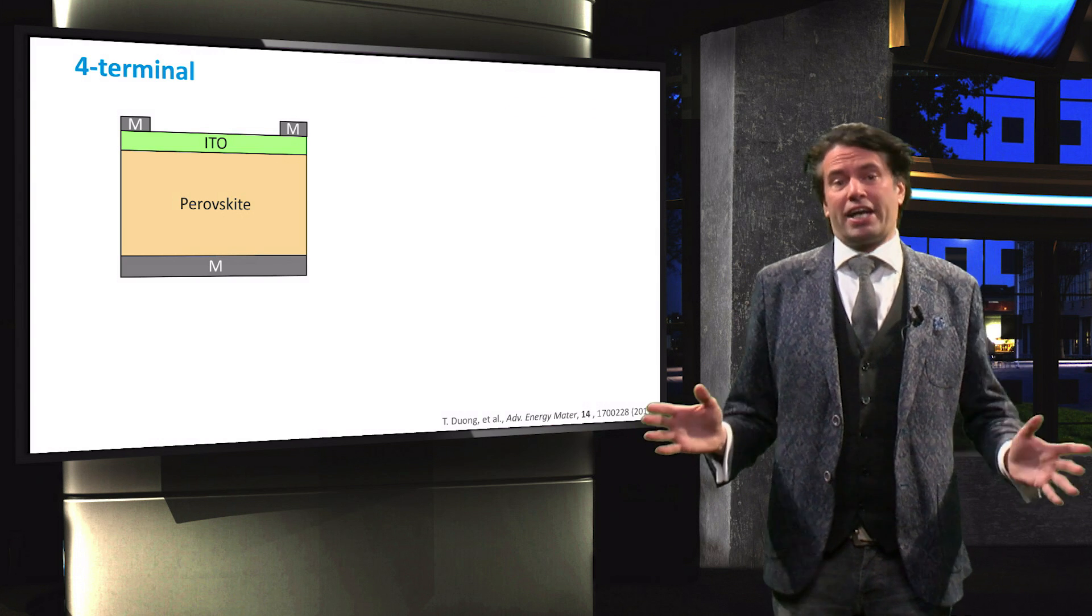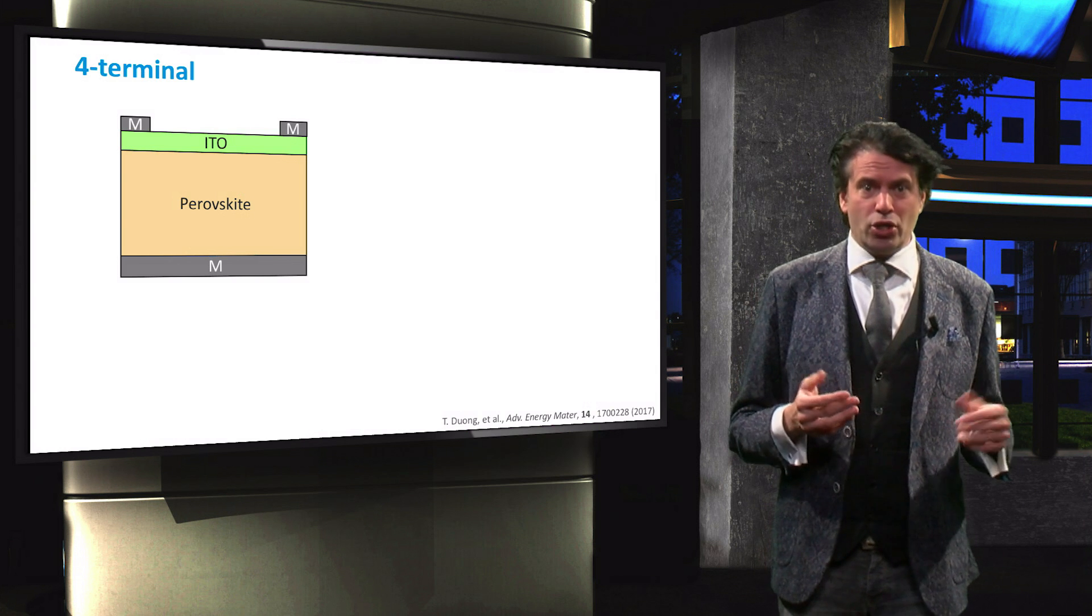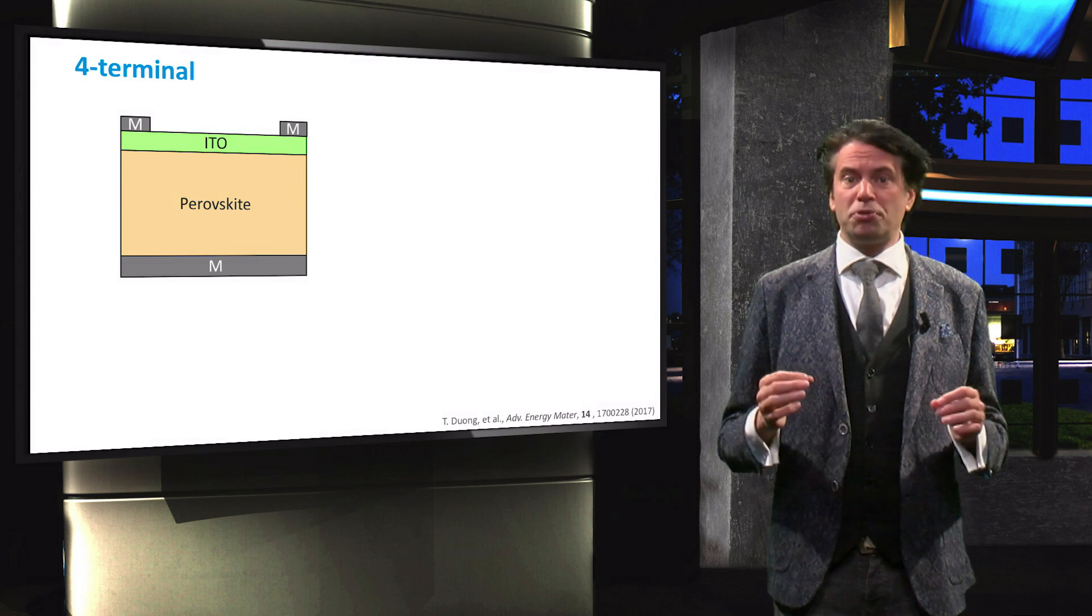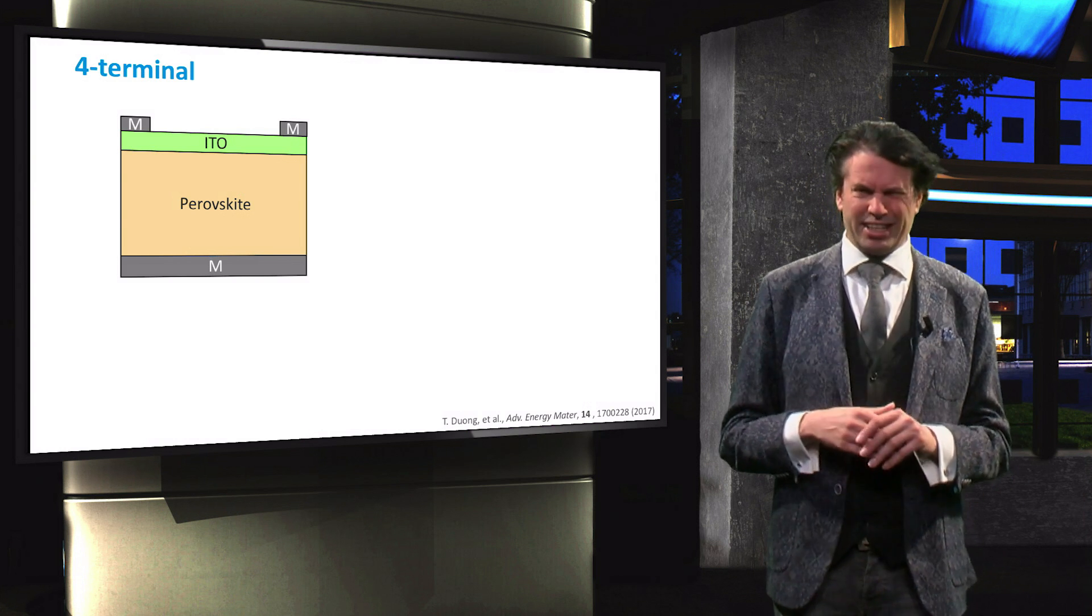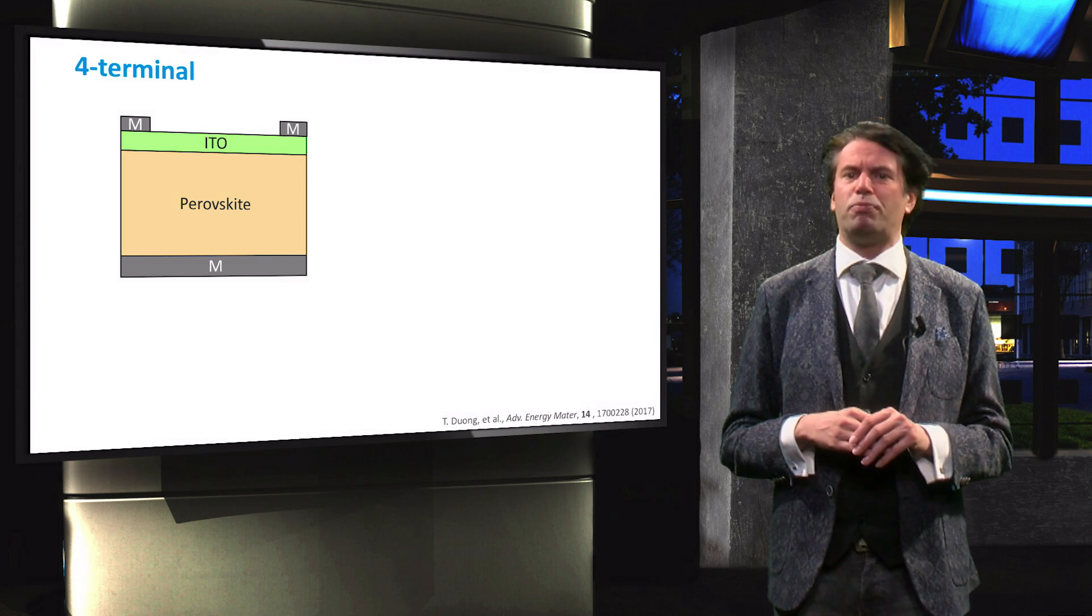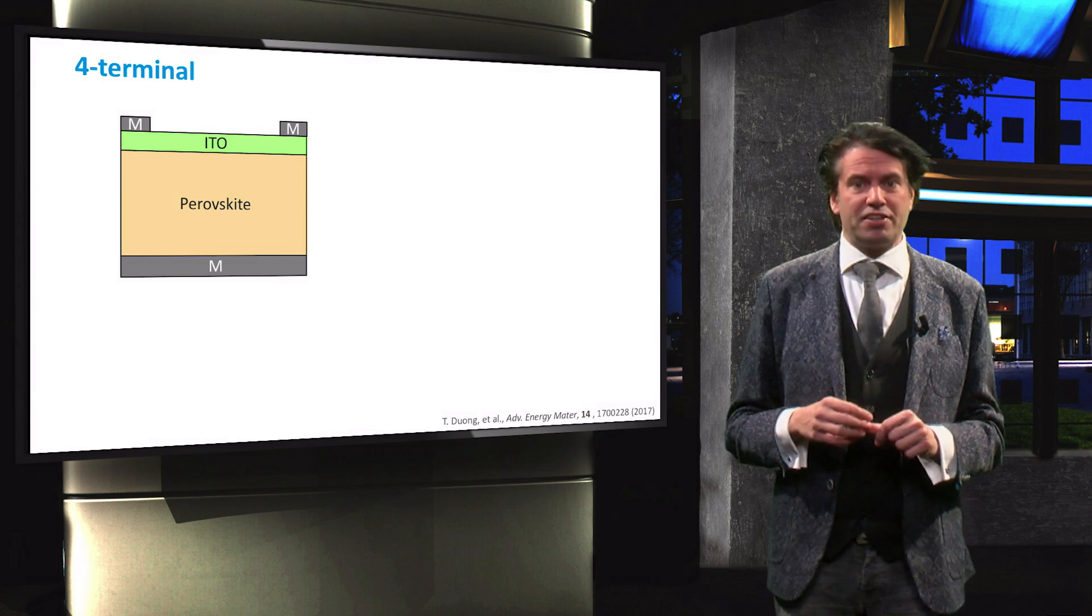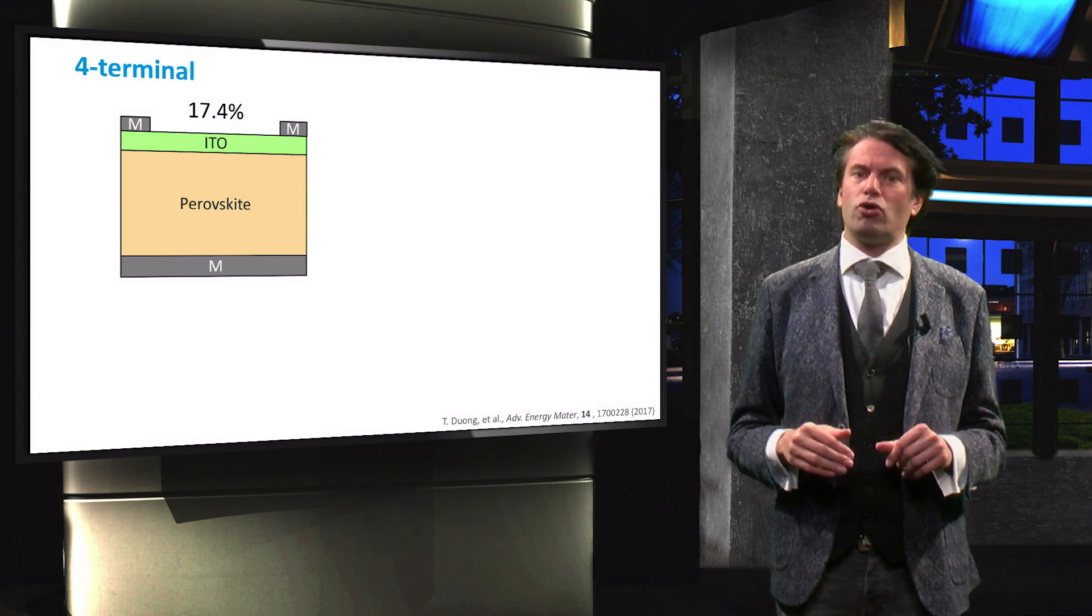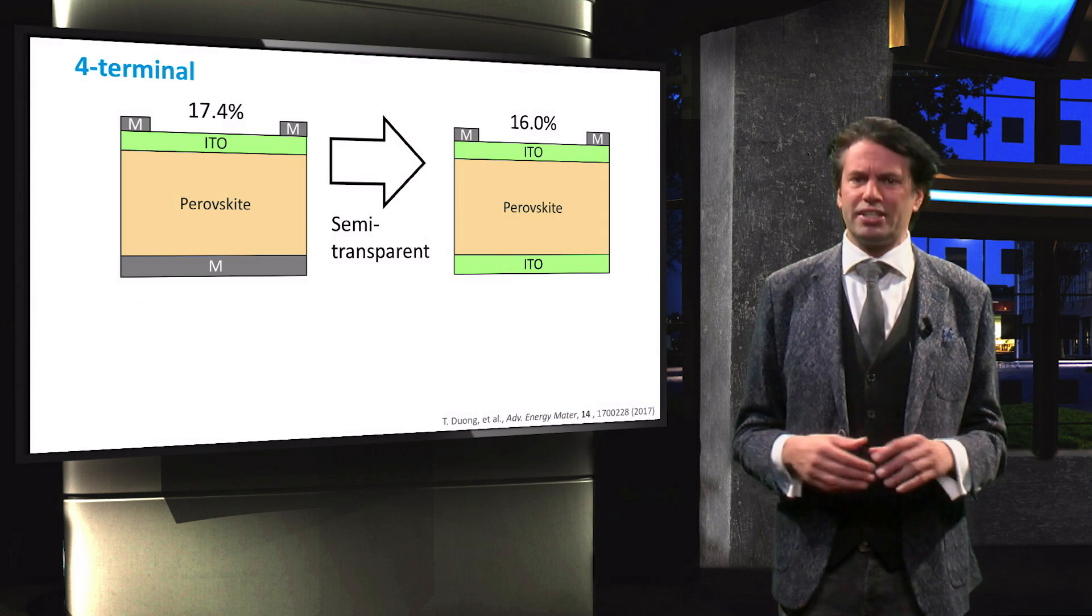The four-terminal mechanically stacked tandem cell outperforms the two-terminal device with a reported record efficiency of 26.4%. The top cell of this device is based on a quadruple-cation perovskite cell with a higher bandgap of 1.73 eV, which is within the optimal range and an efficiency of 17.4%. Nevertheless, this opaque cell is similarly adapted for use in a tandem device.